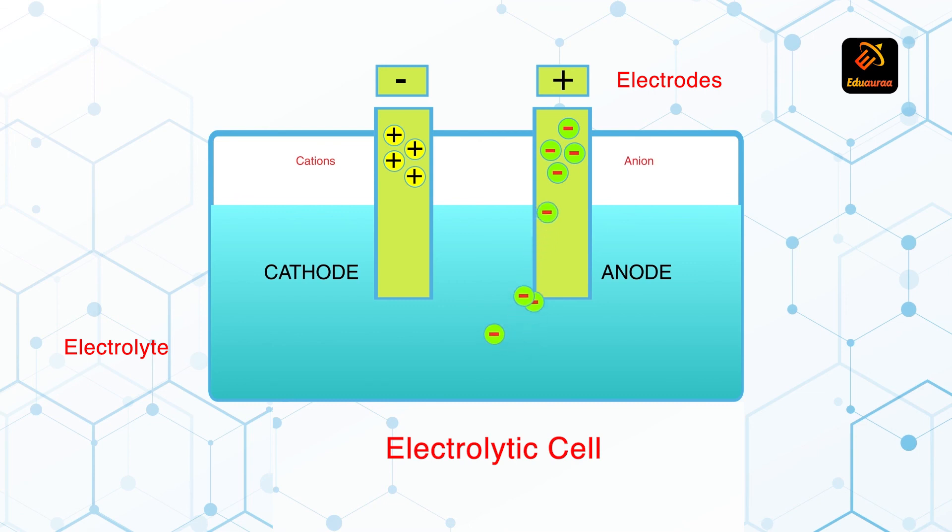And in cathode, current leaves the electrolyte through the cathode. What happens at the anode? Anions are discharged and they move to the anode. And what happens at the cathode? Cations go there.